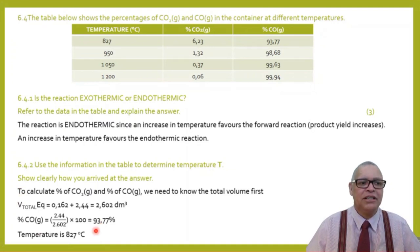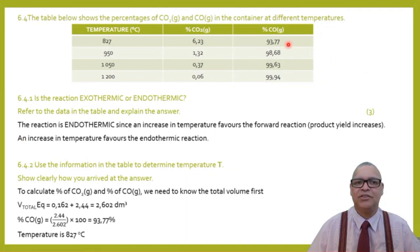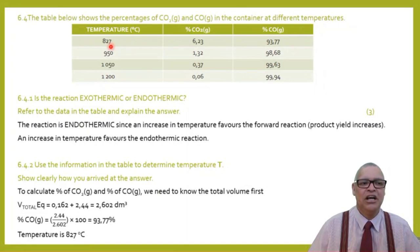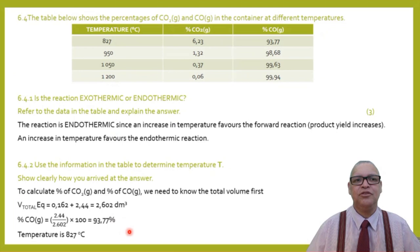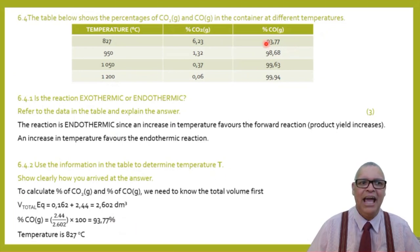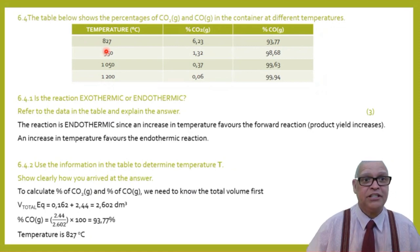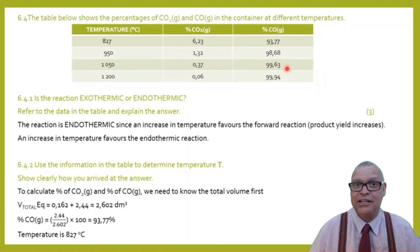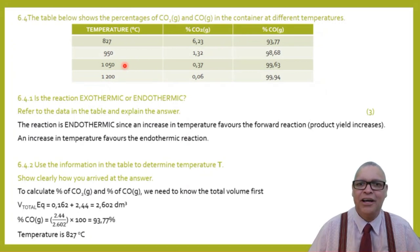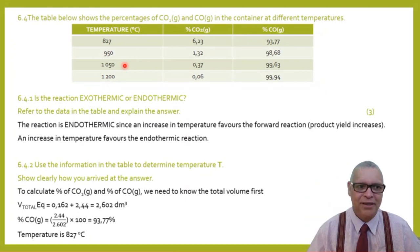Question 6.4.2: use the table to determine temperature T. First calculate the percentage of CO at equilibrium. The total moles at equilibrium = 0.162 + 2.44 = 2.602. The percentage of CO = (2.44/2.602) × 100 = 93.77%. Looking at the table, 93.77% maps to 827°C. Therefore, temperature T = 827°C.